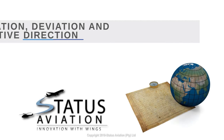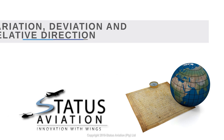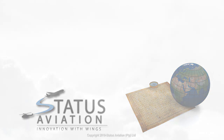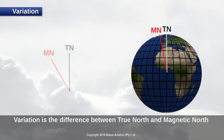In this video we will have a look at variation, deviation and relative bearing. We will only cover the basics, so this will be a short video. Let us start with variation. Variation is the difference between true north and magnetic north.